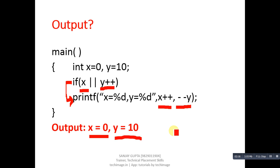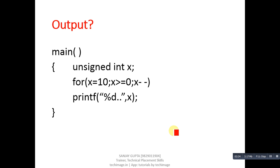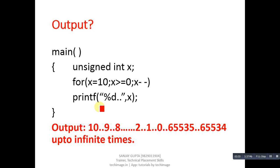This is another code segment. In this code segment, X is a variable which is declared as unsigned, then for loop along with printf. You can see the output of this code segment: it will print 10, 9, 8, 7, 6, 5, 4, 3, 2, 1, 0, then 65535, 65534 up to infinite times.